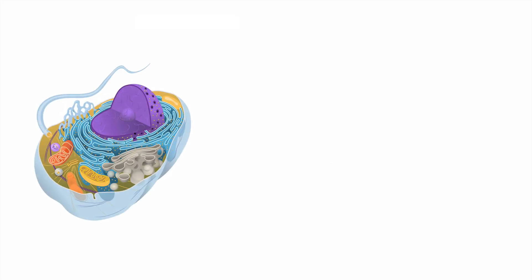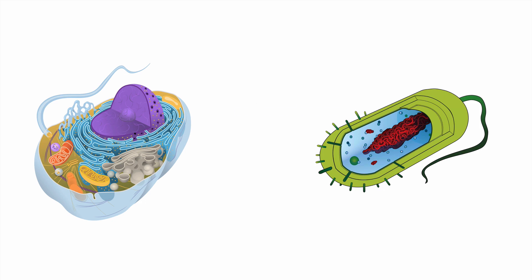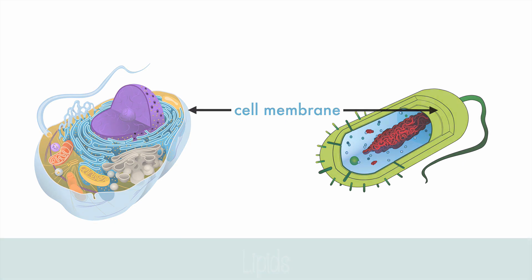All cells have a few things in common, including the cell membrane. Cell membranes and all membrane-bound organelles are made up almost entirely of lipids. Lipids are a broad category of fatty macromolecules, which include oils, waxes, triglycerides, and phospholipids.